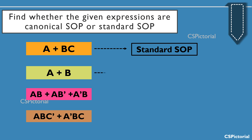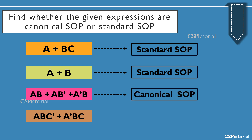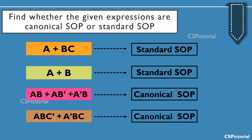The second example expression is also standard SOP. In the expression AB + AB̄ + ĀB, the total literals involved in the whole expression are just A and B, and since each product term includes both A and B, it is a canonical form of SOP. Again, the expression AB·C̄ + Ā·B·C is also a canonical SOP, because each product term includes all the literals involved: A, B, and C.